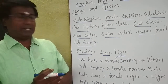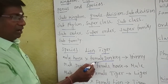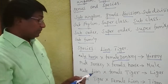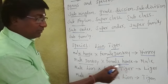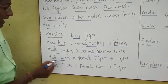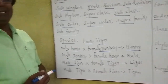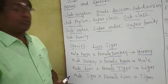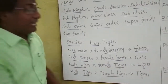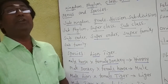For example: a male horse crossed with a female donkey produces a hinny — a sterile animal unable to reproduce. A male donkey crossed with a female horse produces a mule, also sterile. A male lion crossed with a female tiger produces a liger, also sterile. A male tiger crossed with a female lion produces a tigon, also a sterile animal unable to reproduce.